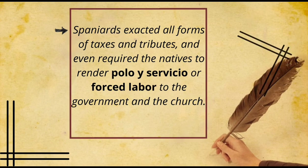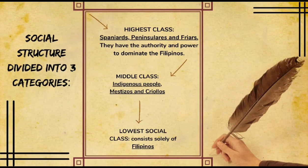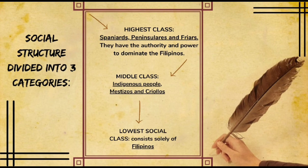During the 19th century, the Philippine social structure was divided into three categories. First is the highest class — Spaniards, peninsulares, and friars — who had the authority and power to dominate Filipinos. Second is the middle class, which includes indigenous people, mestizos, and criollos. Lastly is the lowest social class, which consists solely of Filipinos.